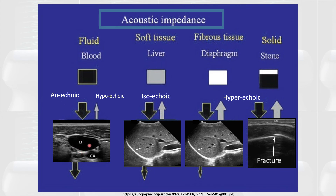Blood vessels appear anechoic — black — on ultrasound. For example, the internal jugular vein and the carotid artery both appear black. If you want to do a central line, that's how they look. The surrounding tissues like subcutaneous tissue are not as black because they reflect some of the ultrasound beams, appearing slightly brighter. These are called hypoechoic structures — they still absorb a lot of the beam but reflect some as well.